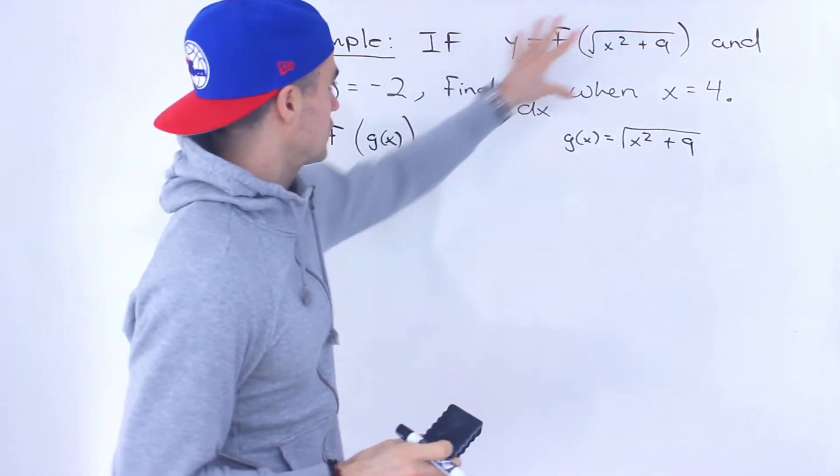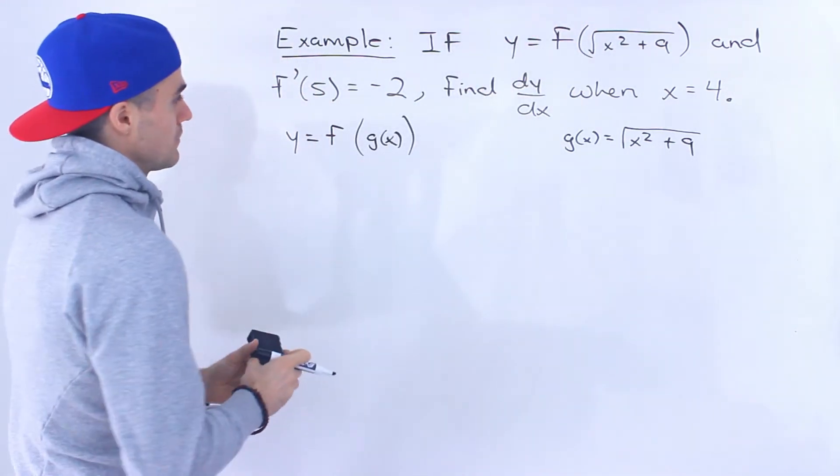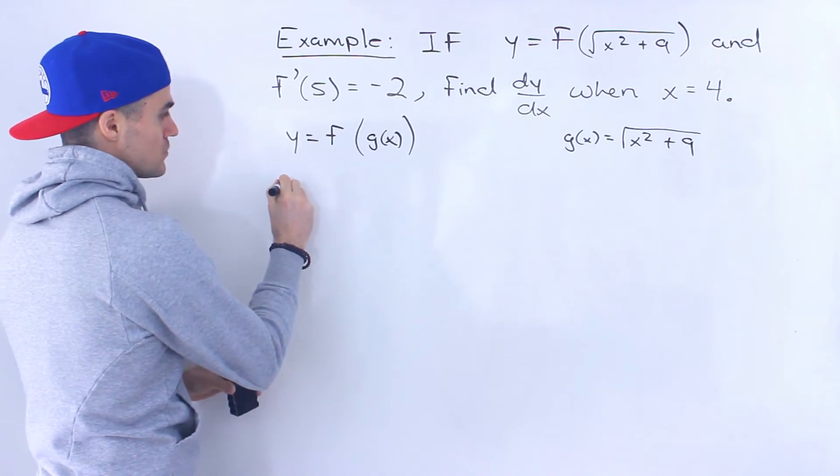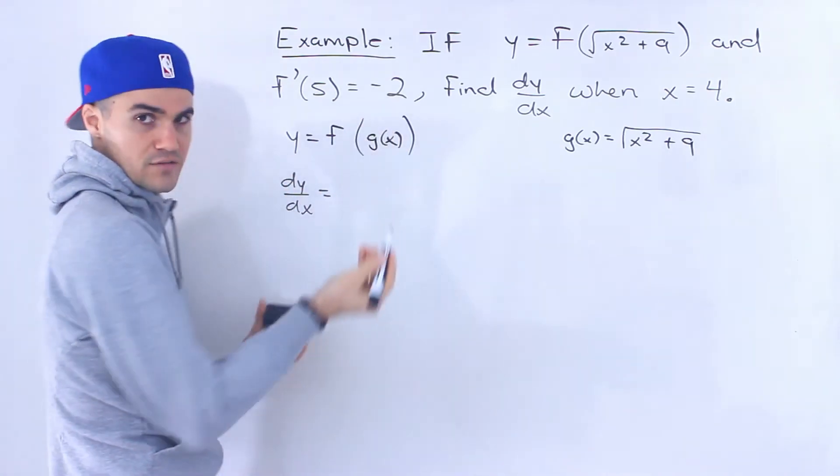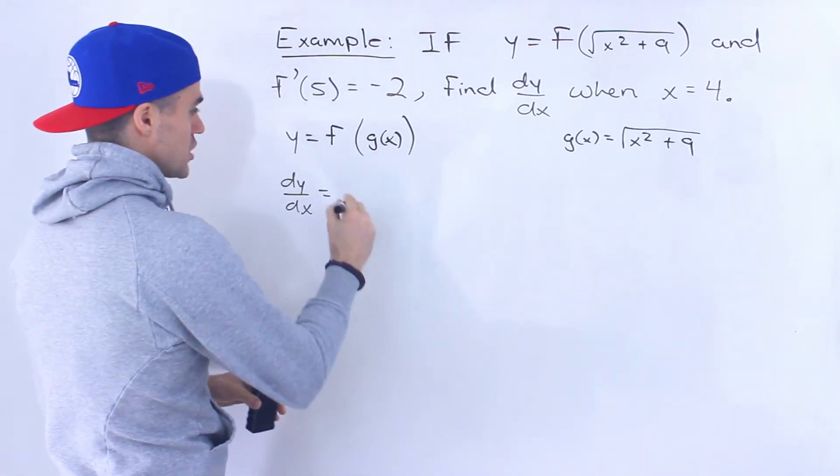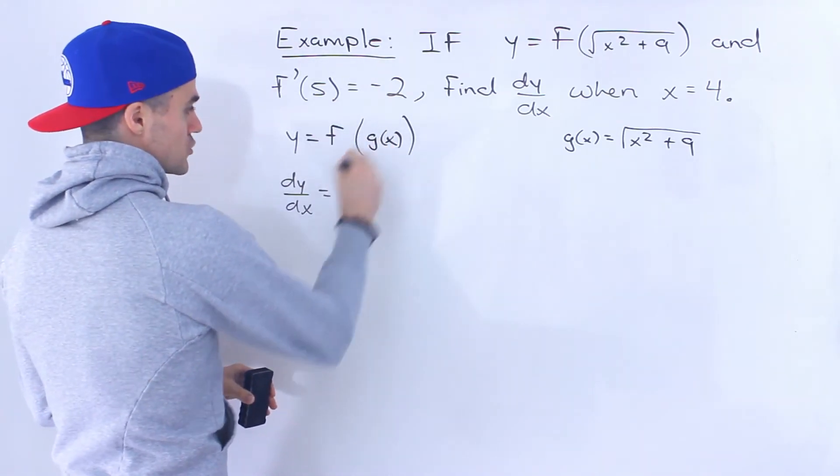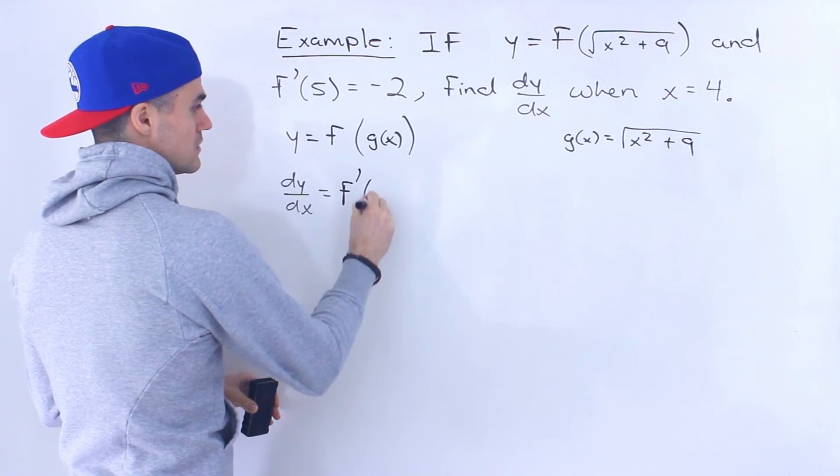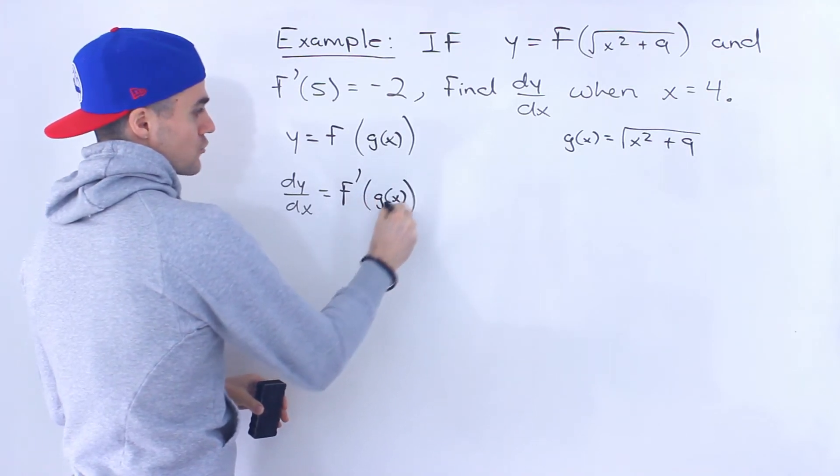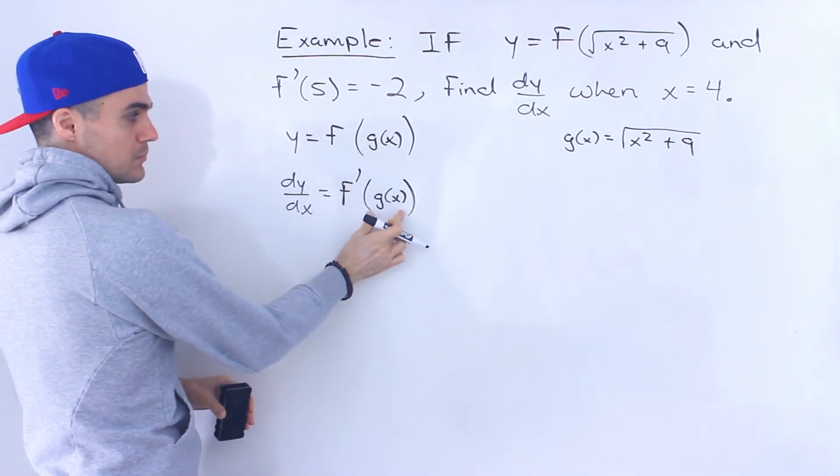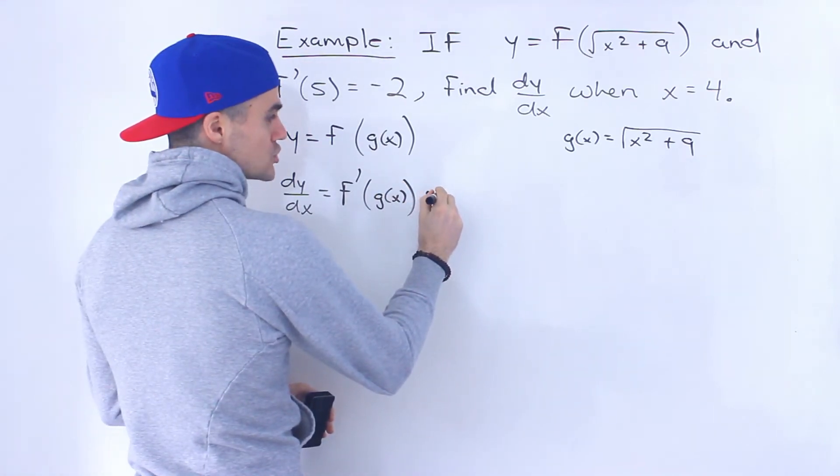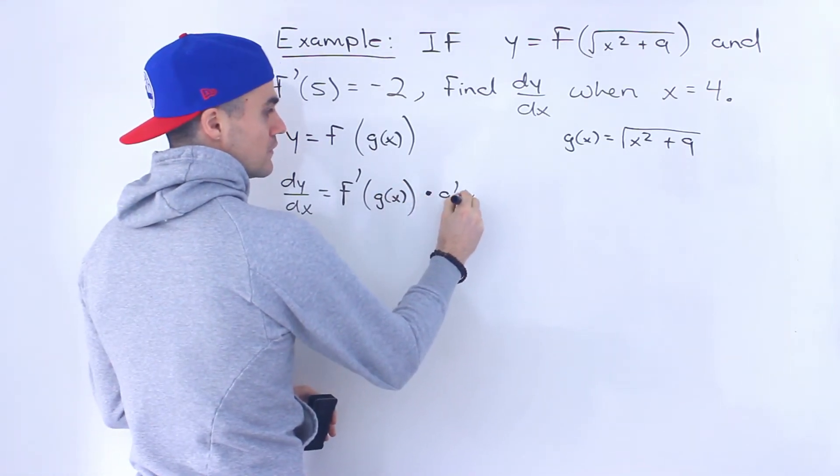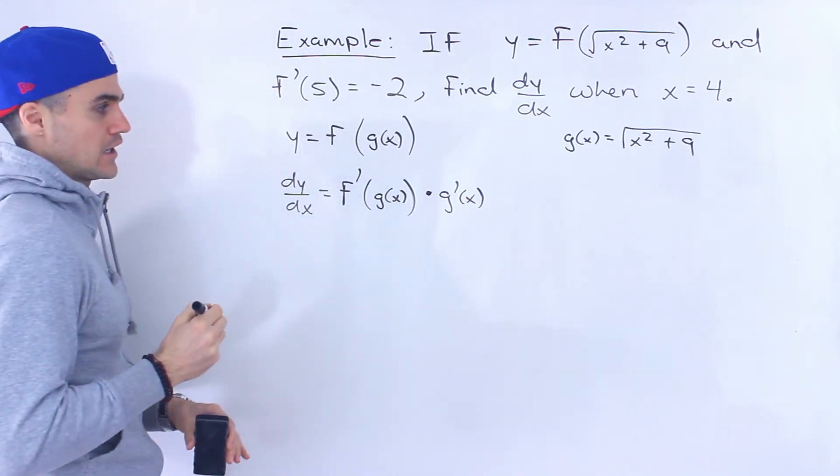All right so I basically just took this and rewrote it like this and what this is going to help us do is when we take the derivative of this, notice that this is a composite function here, so we're gonna have to use the chain rule. So we know that the derivative of this is the derivative of the outside function, keeping that inner function the same, times the derivative of the inner function.